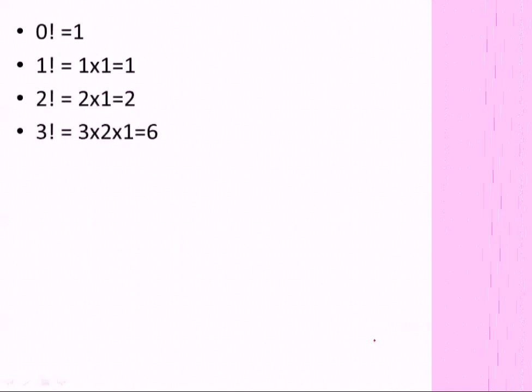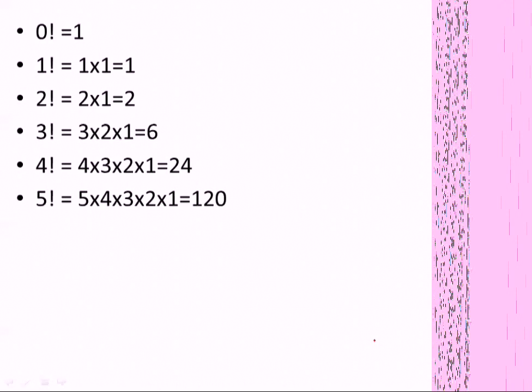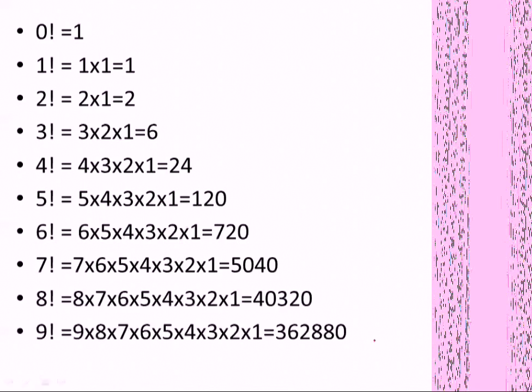1 factorial is 1 into 1. 2 factorial is 2 into 1, that is 2. 3 factorial is 3 into 2 into 1, that is 6. 4 factorial is 4 into 3 into 2 into 1, that is 24. 5 factorial is 5 into 4 into 3 into 2 into 1. 6 factorial is 6 into 5 into 4 into 3 into 2 into 1, that is 720. 7 factorial is 5040. 8 factorial is 40320. 9 factorial is 362880.